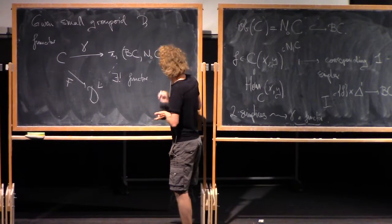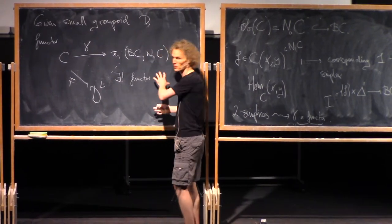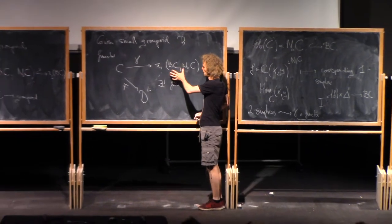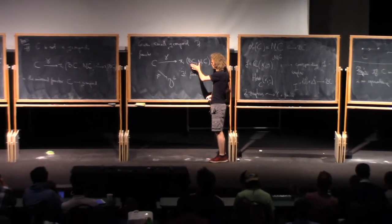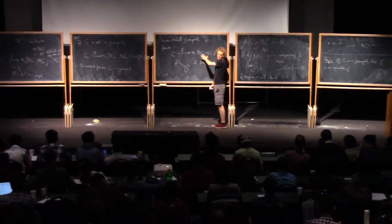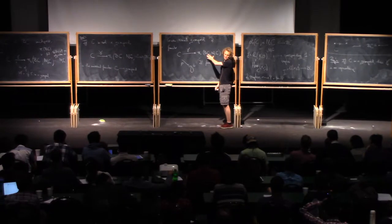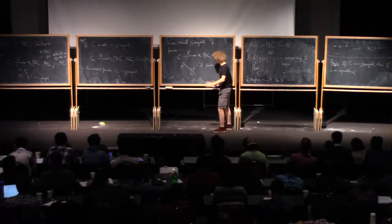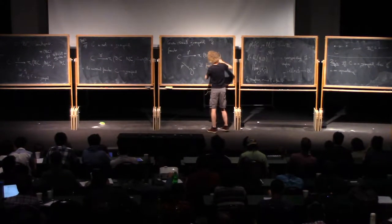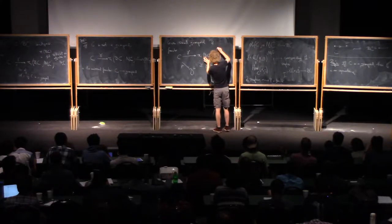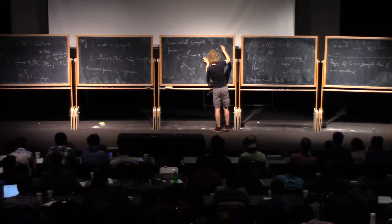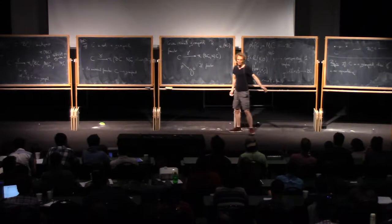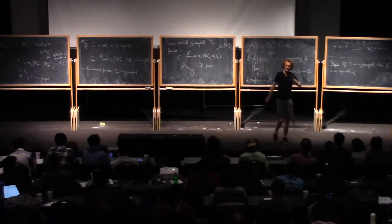There's another statement you can make. The problem with this one is that it's a universal property up to isomorphism of categories — it's a universal property for this specific object, but not for an equivalent category. There's another statement you can make where you say something up to equivalence.